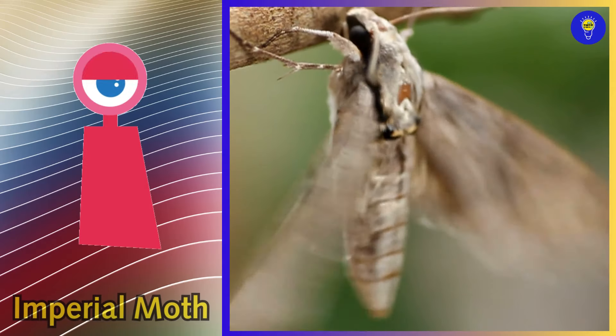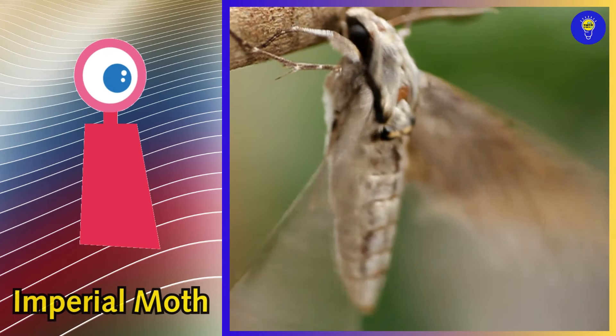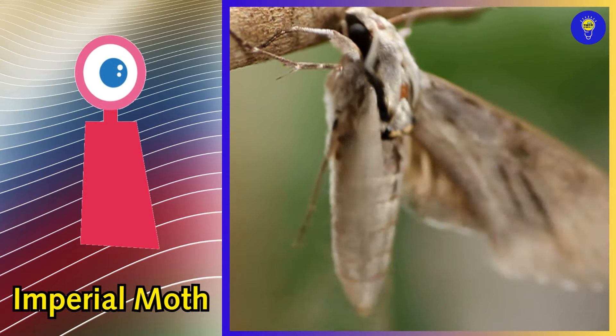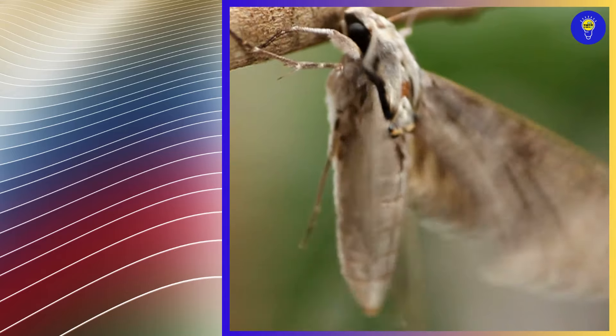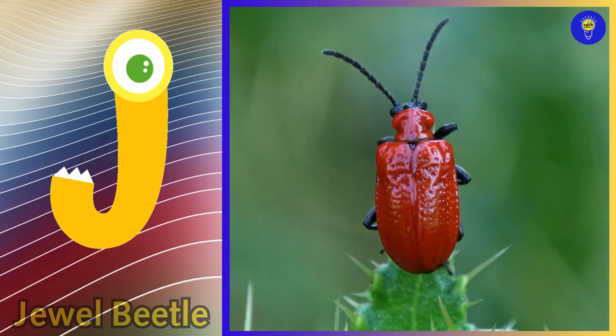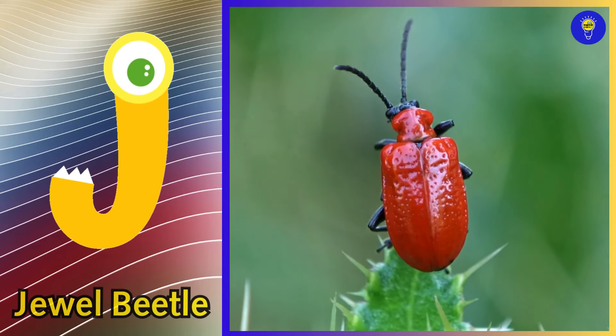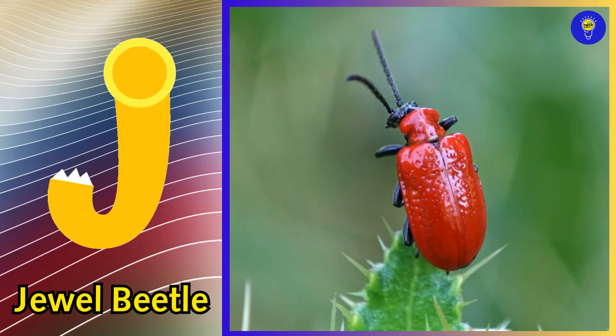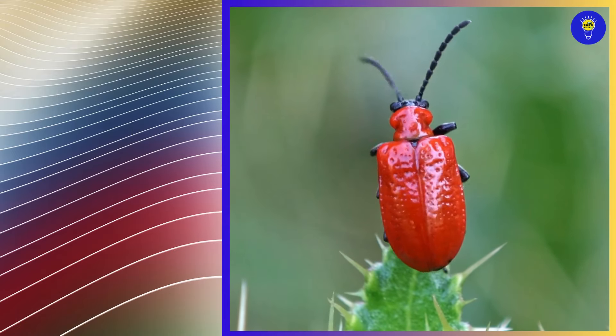I is for imperial moth. I, i, imperial moth. J is for jewel beetle. J, j, jewel beetle.